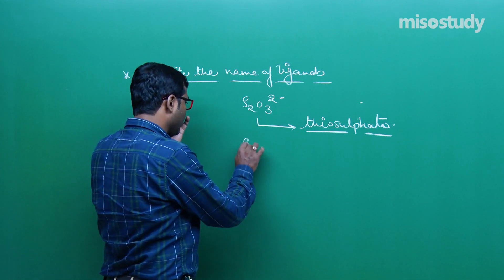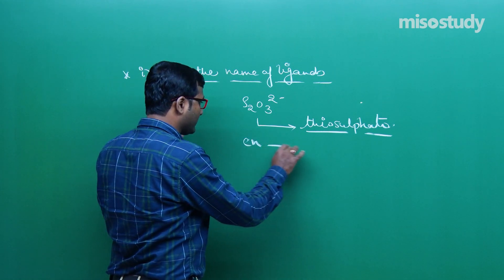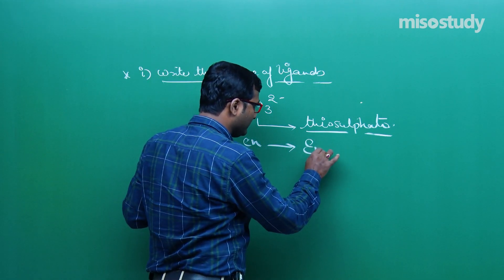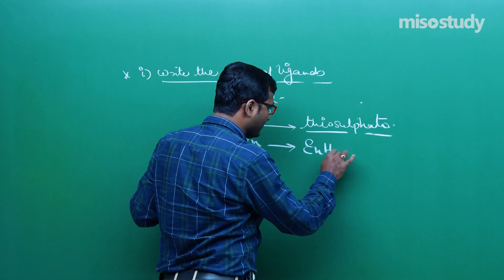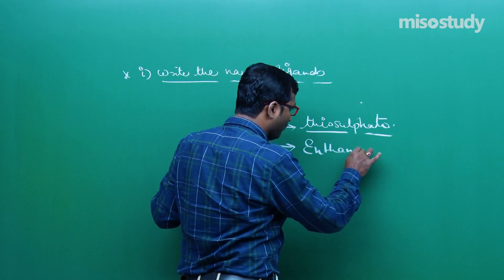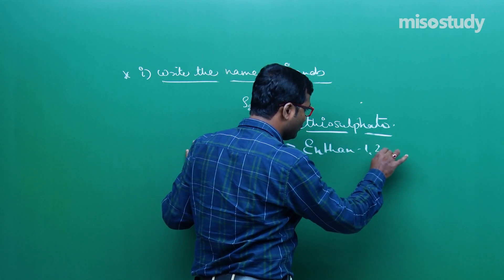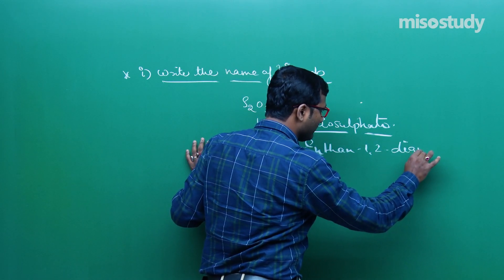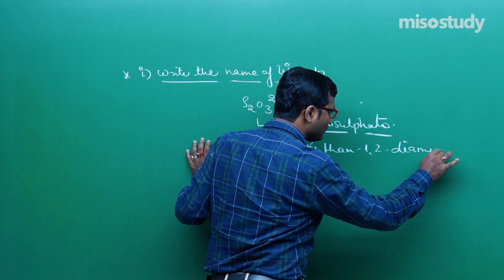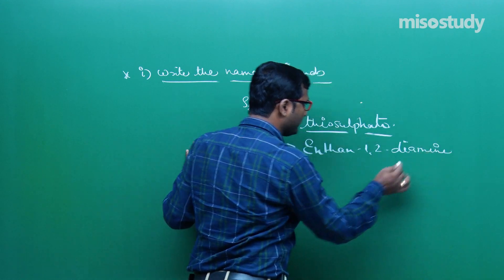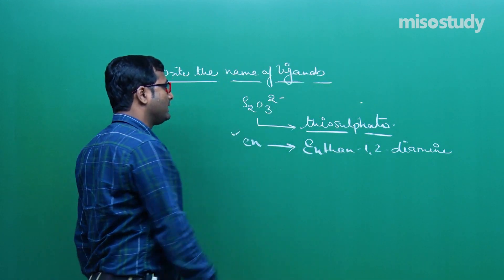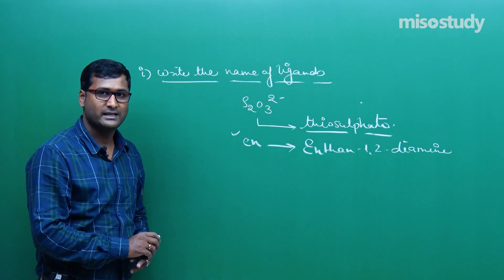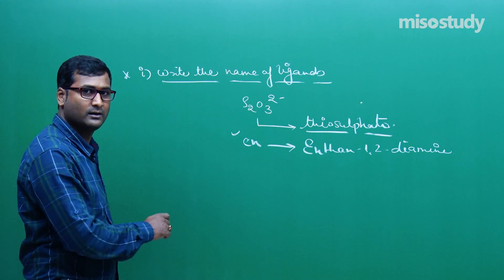If anyone asks you, what is the name of EN — EN that is ethane-1,2-diamine. This is not a double M, this is A-M-I-N-E. Clear to you? This will help you a lot.